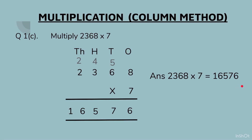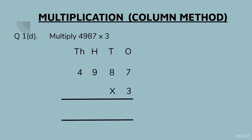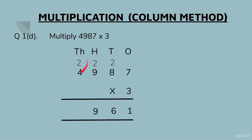Part (d): 4987 × 3. Starting with the ones column: 3 sevens are 21 — write 2 at the top and 1 at the bottom. 3 eights are 24, plus 2 gives 26 — write 2 at the top and 6 at the bottom. 3 nines are 27, plus 2 gives 29 — write 2 at the top and 9 at the bottom. 3 fours are 12, plus 2 gives 14. Answer: 4987 × 3 = 14,961.